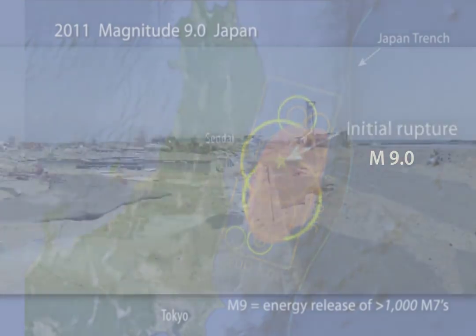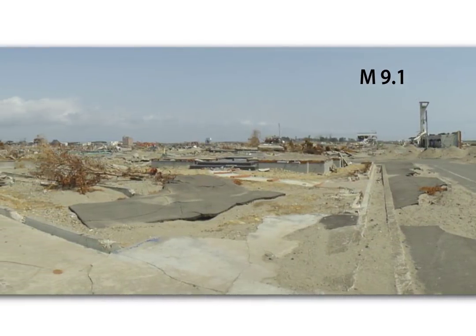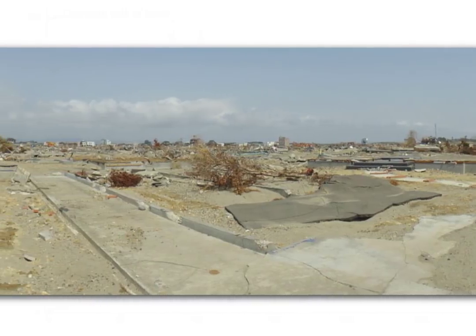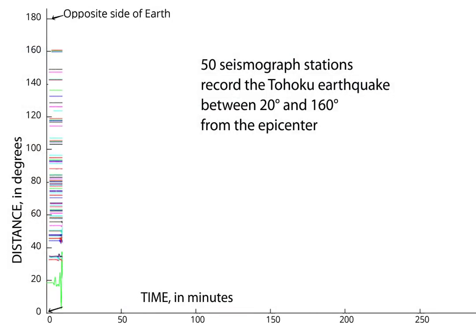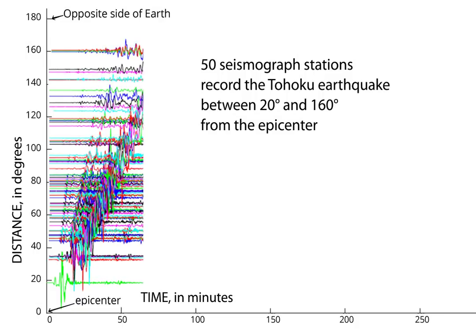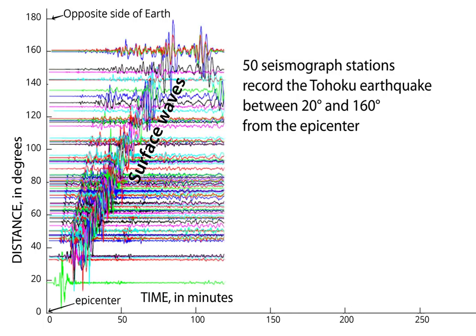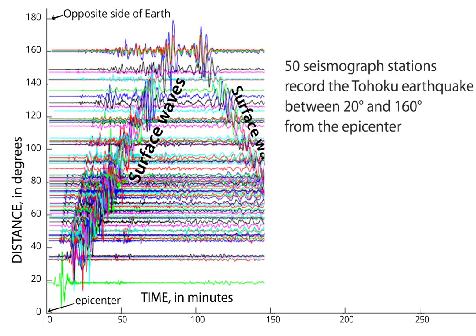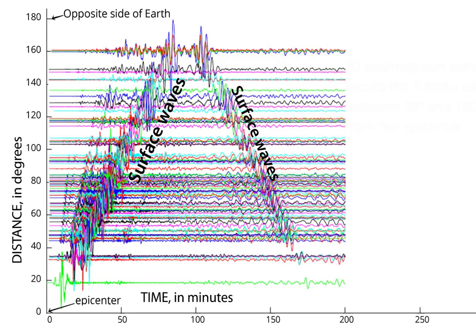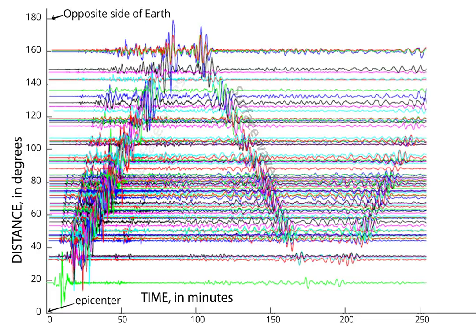Five years later, when all the data were in, it was ultimately classified as a magnitude 9.1, the fourth largest earthquake ever recorded. The reason it took so long to determine the magnitude is because the larger the earthquake, the more complex are the seismic waves that are recorded from the earthquake. In addition, surface waves can be more prominent farther away from the earthquake, in contrast to body waves that tend to die off or attenuate at greater distances from the hypocenter.